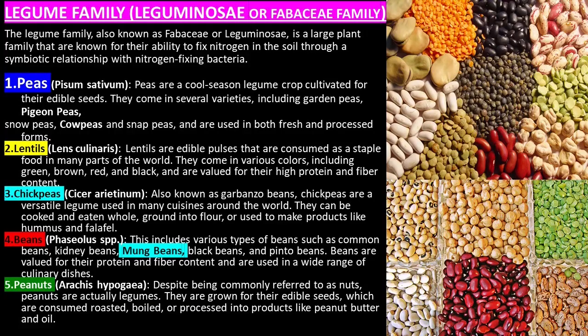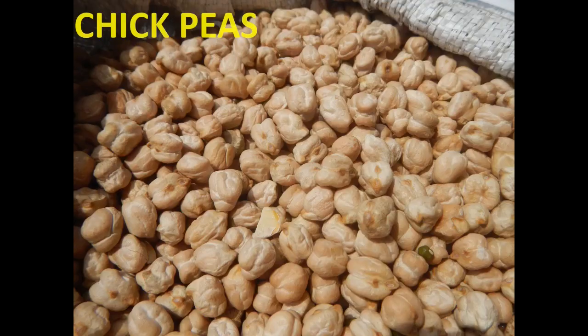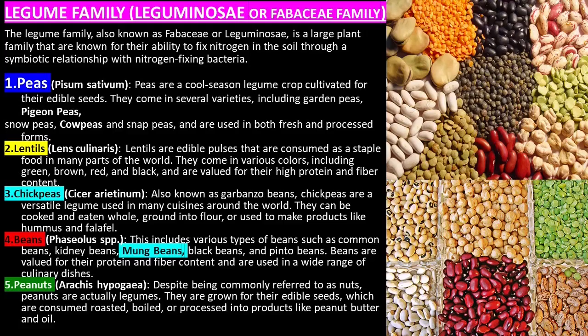The legume family, also known as Fabaceae or Leguminosae, is a large plant family known for their ability to fix nitrogen in the soil through a symbiotic relationship with nitrogen-fixing bacteria. Common members of the legume family include soybeans, peas, chickpeas, lentils, peanuts, and leguminous cover crops like clover and vetch.